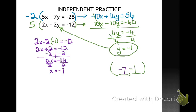Okay, I got the solution negative 7, negative 1 for my first independent practice, and you can check your work against mine. I multiplied my first equation by negative 2 to create a negative 10x, and my second equation by positive 5 to create a positive 10x.